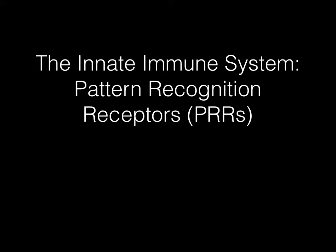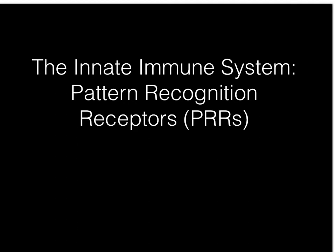It turns out that there are what are called pattern recognition receptors, or PRRs. The P can stand for pattern, but another way to think about it is pathogen recognition receptors. We call them pattern recognition receptors because they're detecting molecular patterns. But you can think of the PRRs as being pathogen recognition receptors because that's what they do — they recognize pathogens.